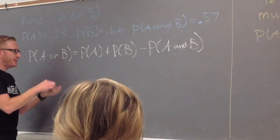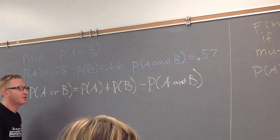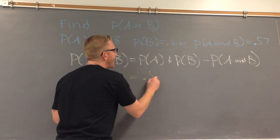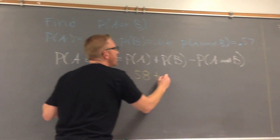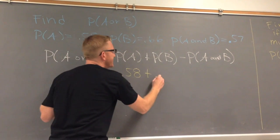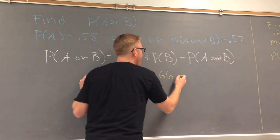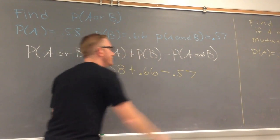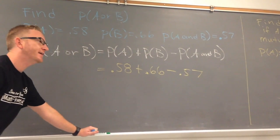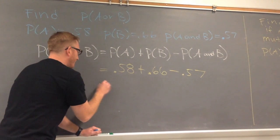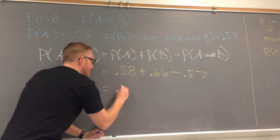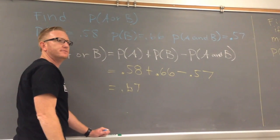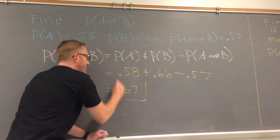All they have to do is plug it in — I don't know why you're making it so hard. So this is 0.58 plus 0.66, minus the intersection of the two, 0.57. Count all that out and we get 0.67.